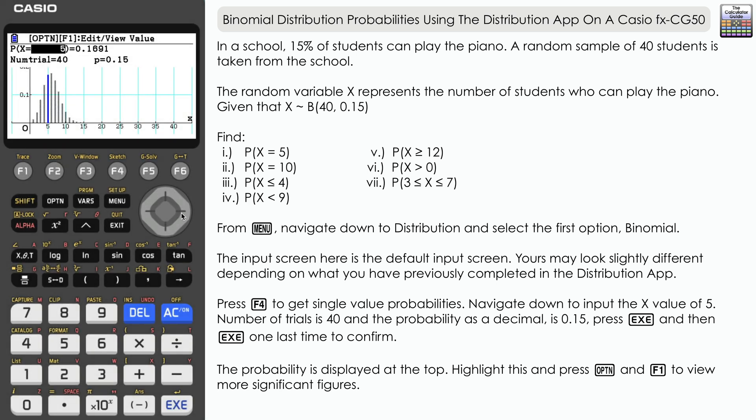Now if we need more than that, what we can do is highlight that probability 0.1691, press option and then F1. And you can see we've got up to nine significant figures there displayed if we need more.